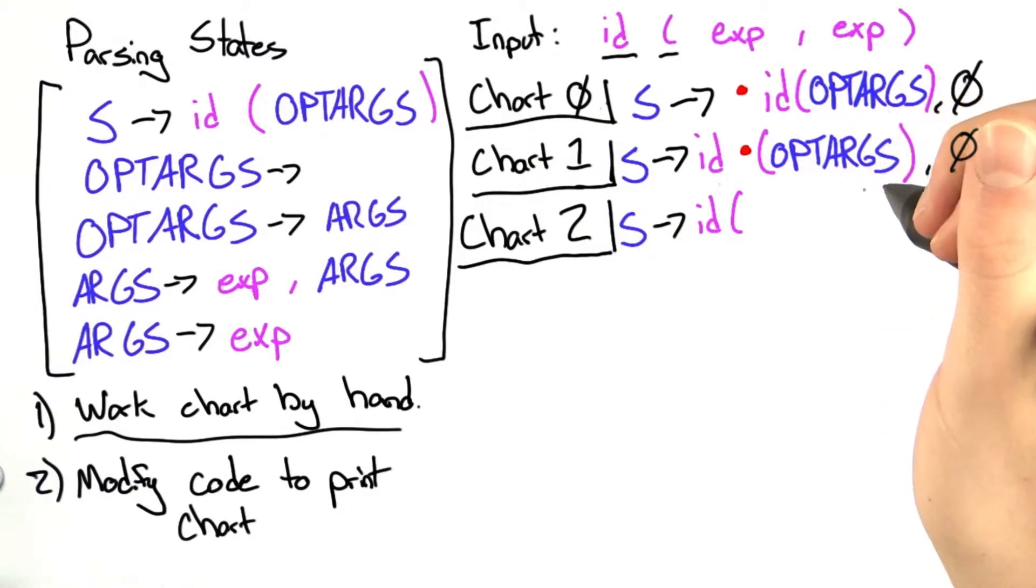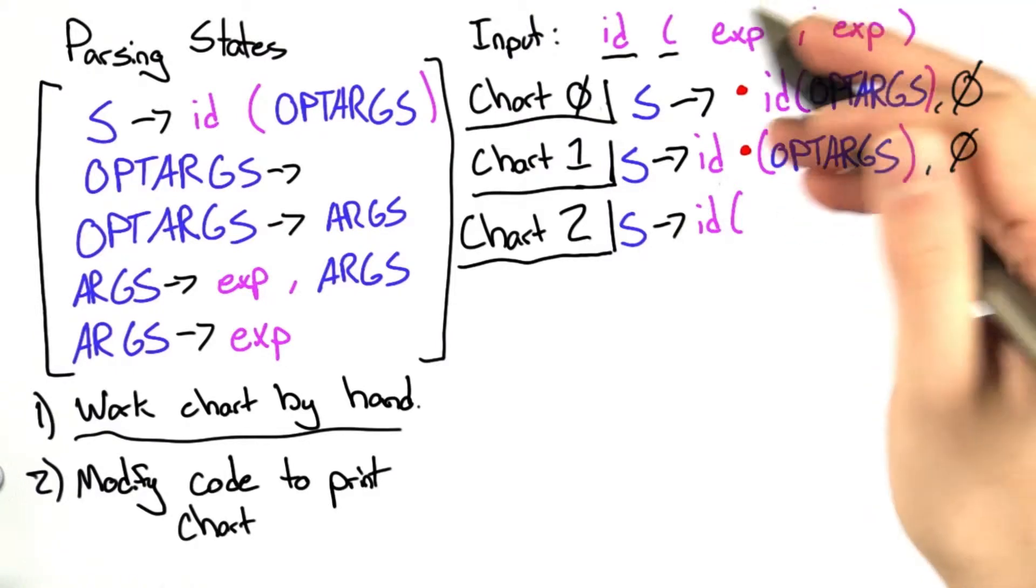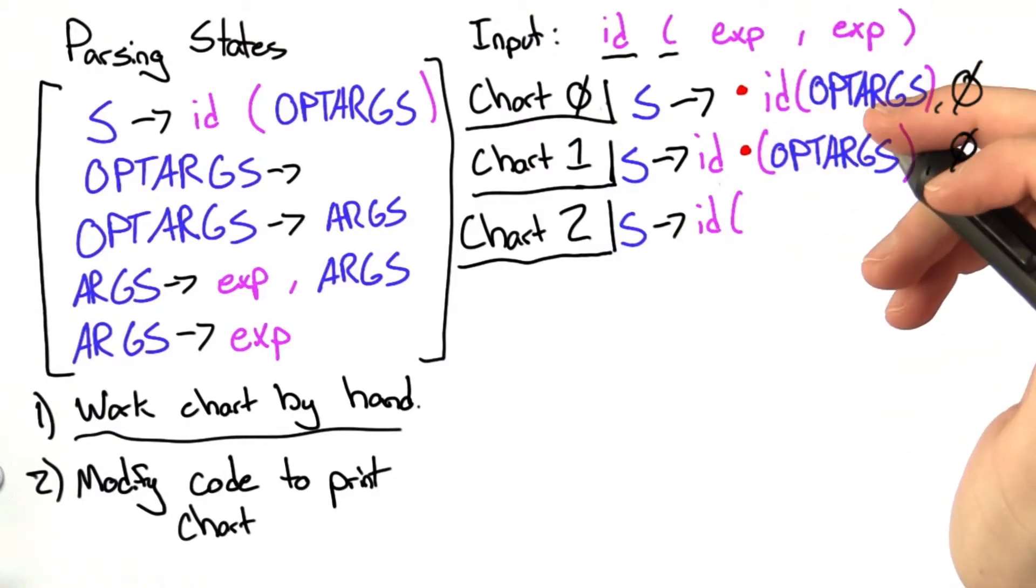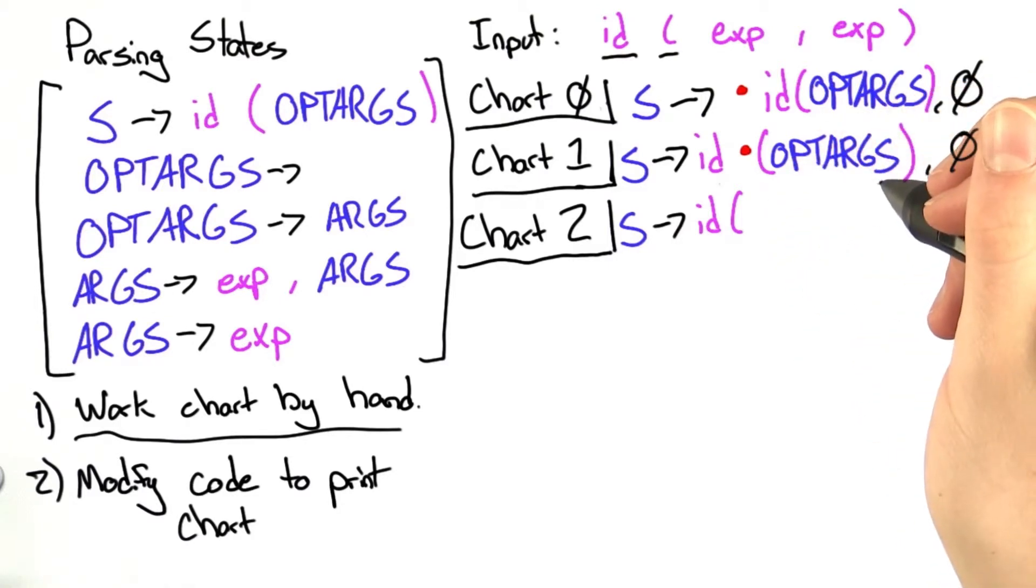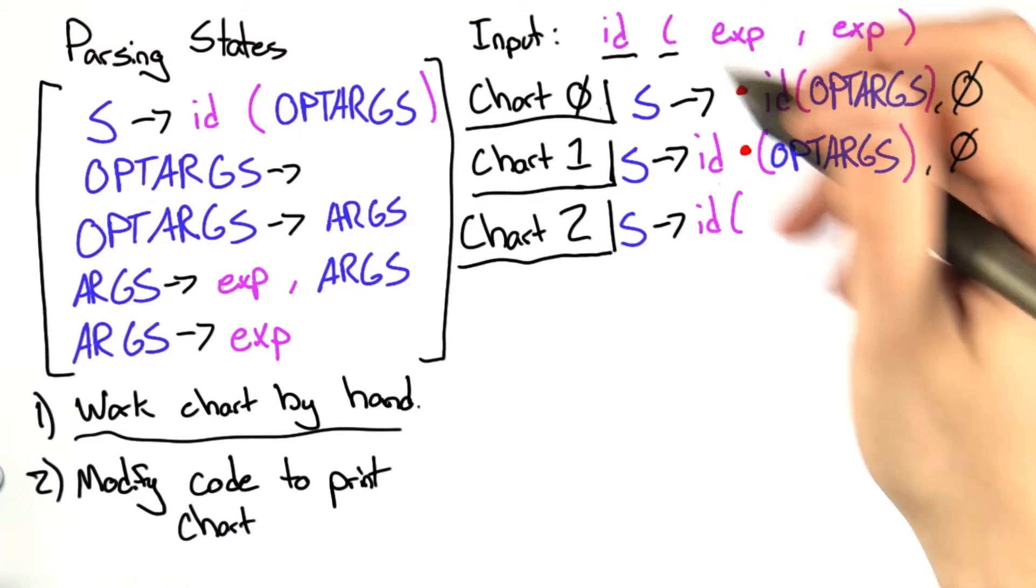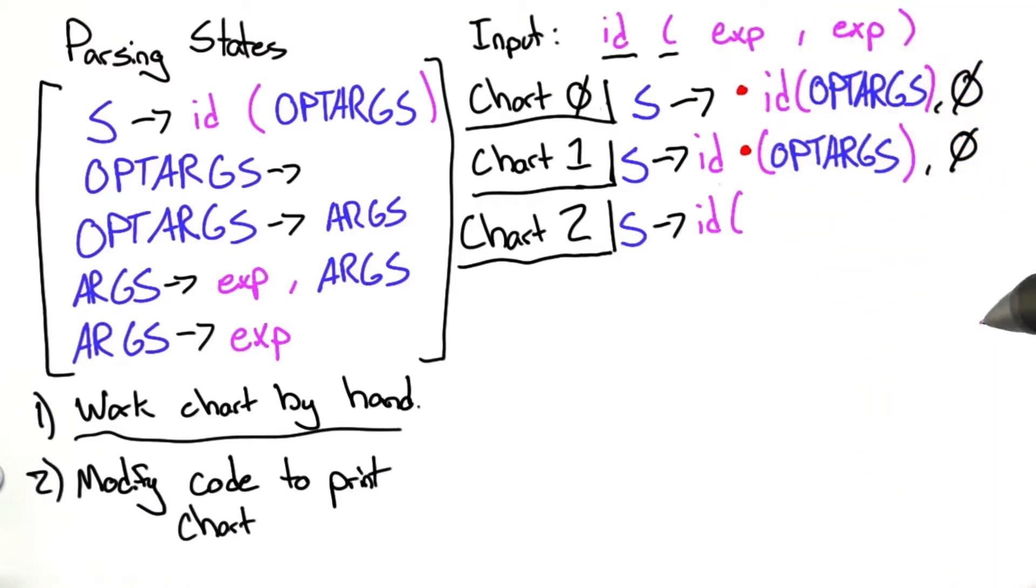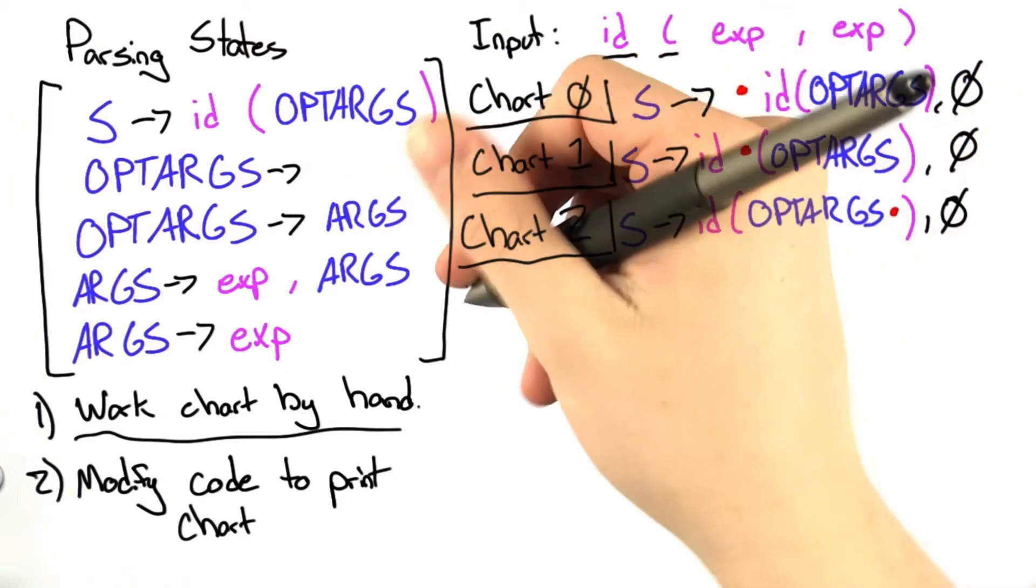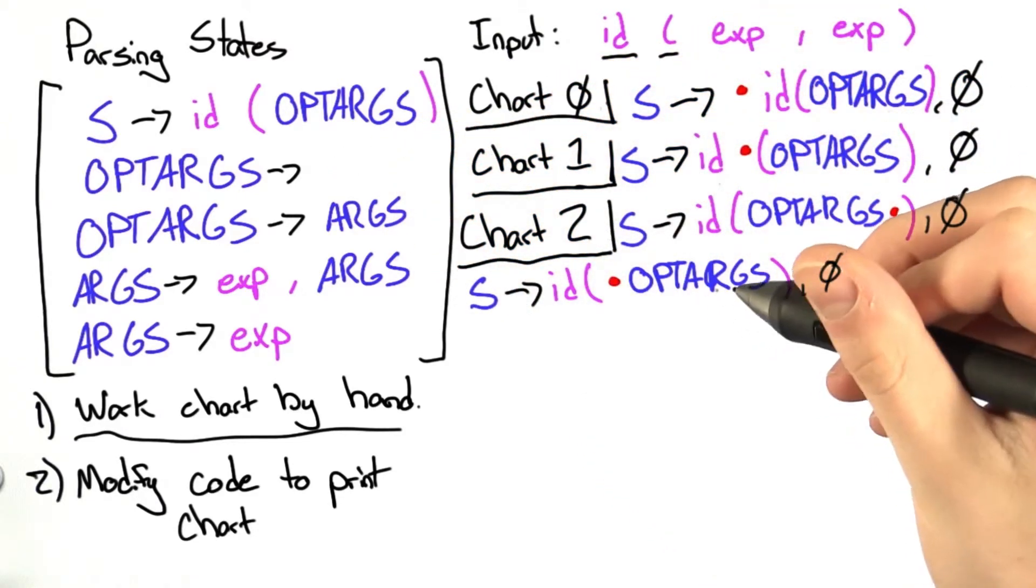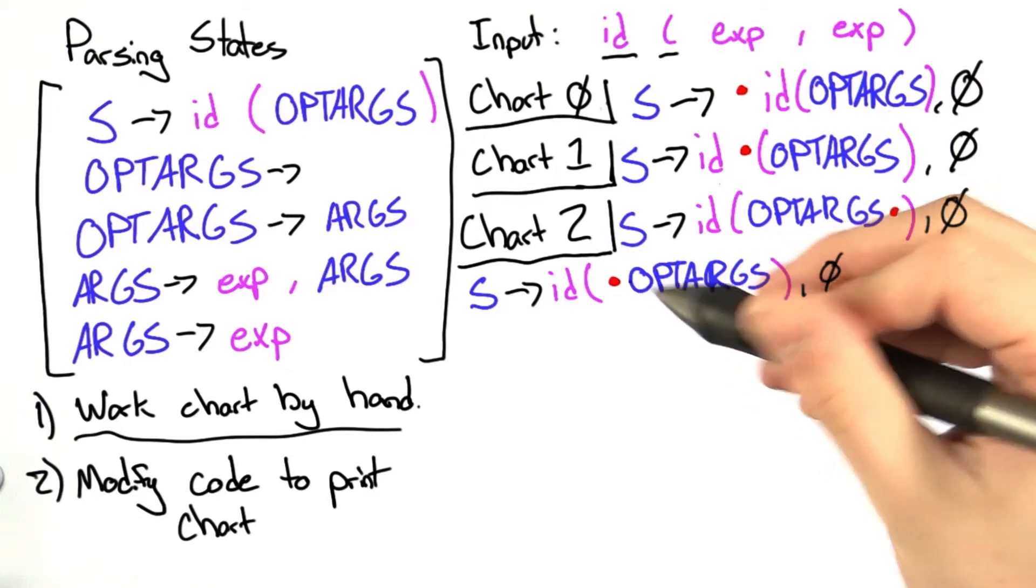One is that optional arguments is empty. We don't know yet because we haven't seen the rest of the input token list. In that case, we're going to be past optional arguments. There's also the case where optional arguments isn't empty, which is actually what's going on with our input list. Let's write both those out. Here we've moved past optional arguments, presumably because it's empty by this rule right here. Then we have the other choice where optional arguments is not empty, and we're going to be processing it.